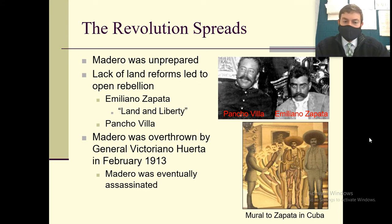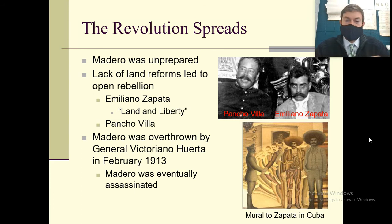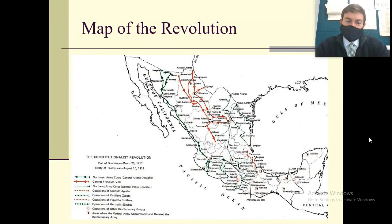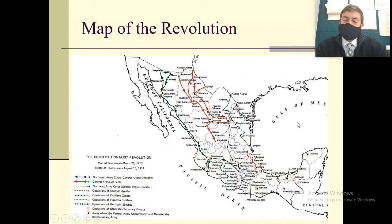Madero was actually overthrown by General Victoriano Huerta in 1913, and Madero was eventually assassinated. People were not happy with the job he was doing as president because he wasn't doing the things they thought he was going to do when he overthrew Díaz. Here's a map of the revolution. You can notice there's a bunch of different people revolting, a bunch of different campaigns — there's no real organization to it, which is kind of the downfall of the Mexican Revolution. They weren't unified in their goals, which is why it took so long to get anywhere.